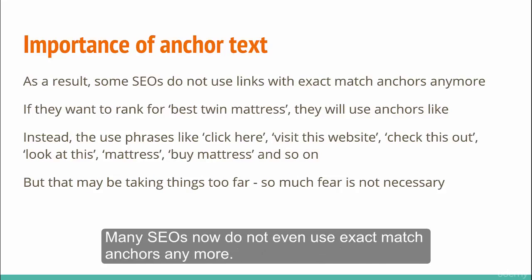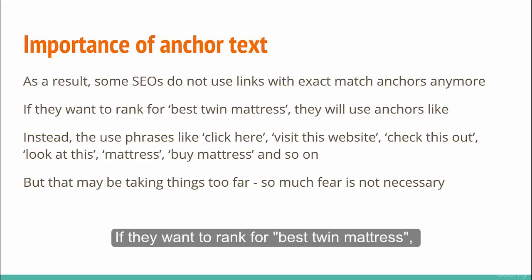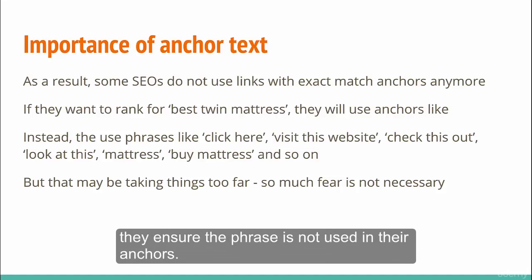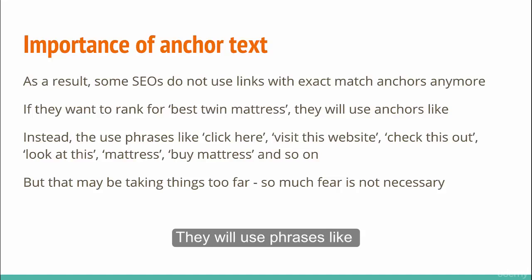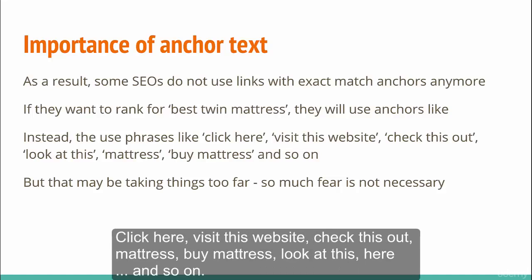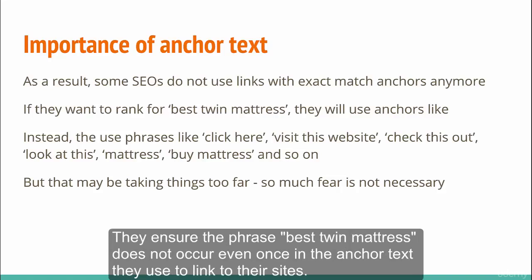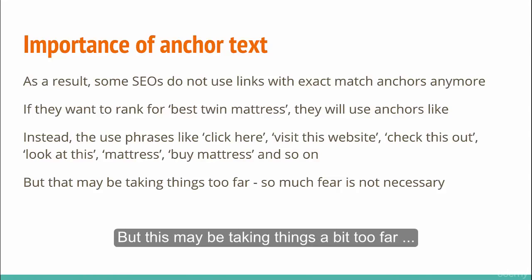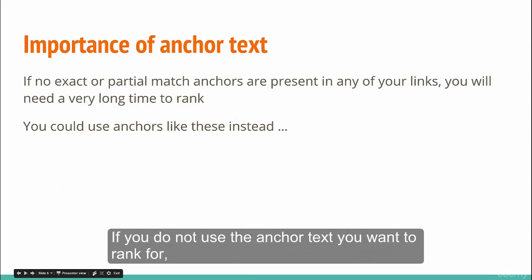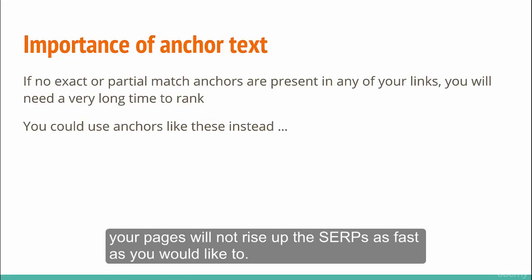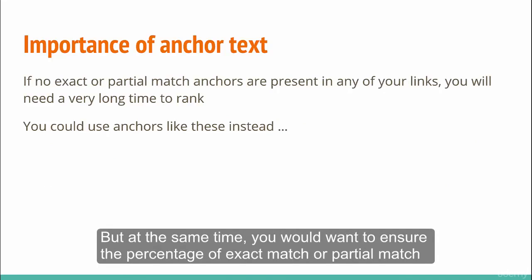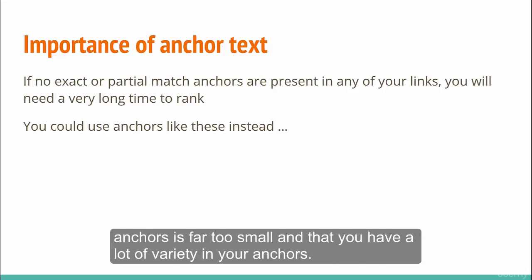Many SEOs now do not even use exact match anchors anymore. If they want to rank for 'best twin mattress,' they ensure the phrase is not used in their anchors. They will use phrases like 'click here,' 'visit this website,' 'check this out,' and so on, ensuring 'best twin mattress' does not occur even once. But this may be taking things a bit too far. If you do not use the anchor text you want to rank for, your pages will not rise up the SERPs as fast as you would like. At the same time, you want to ensure the percentage of exact match or partial match anchors is small, with a lot of variety in your anchors.